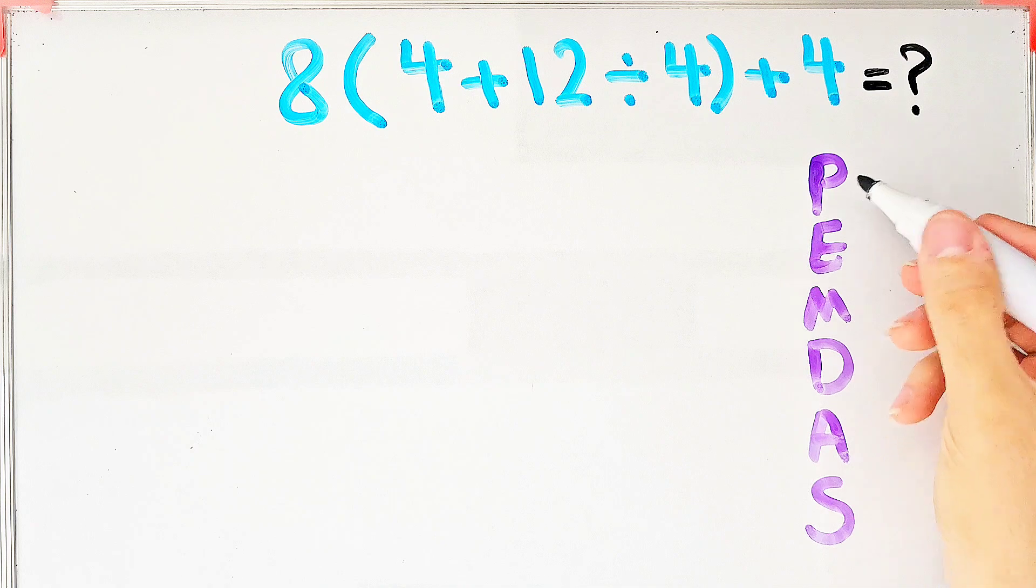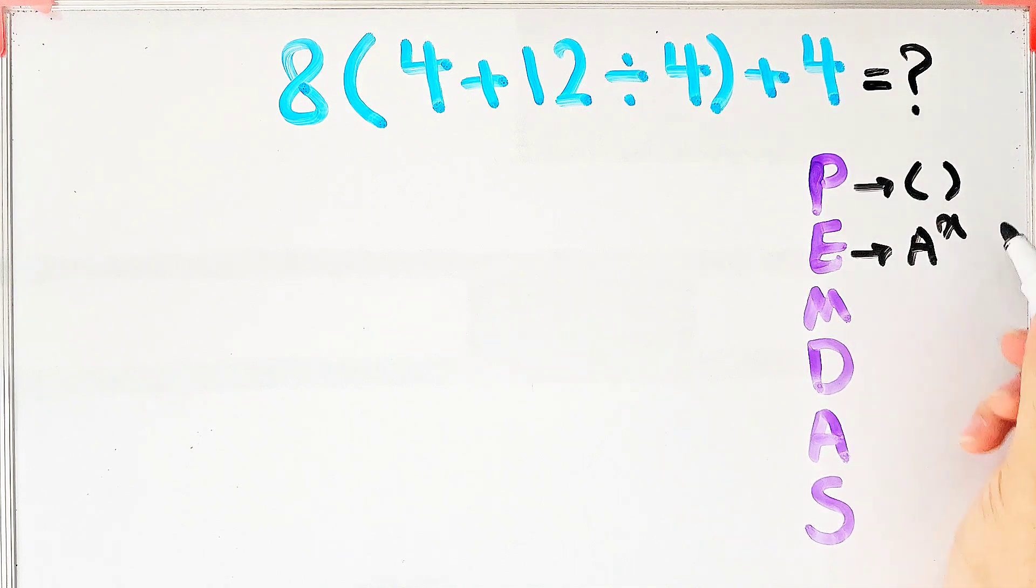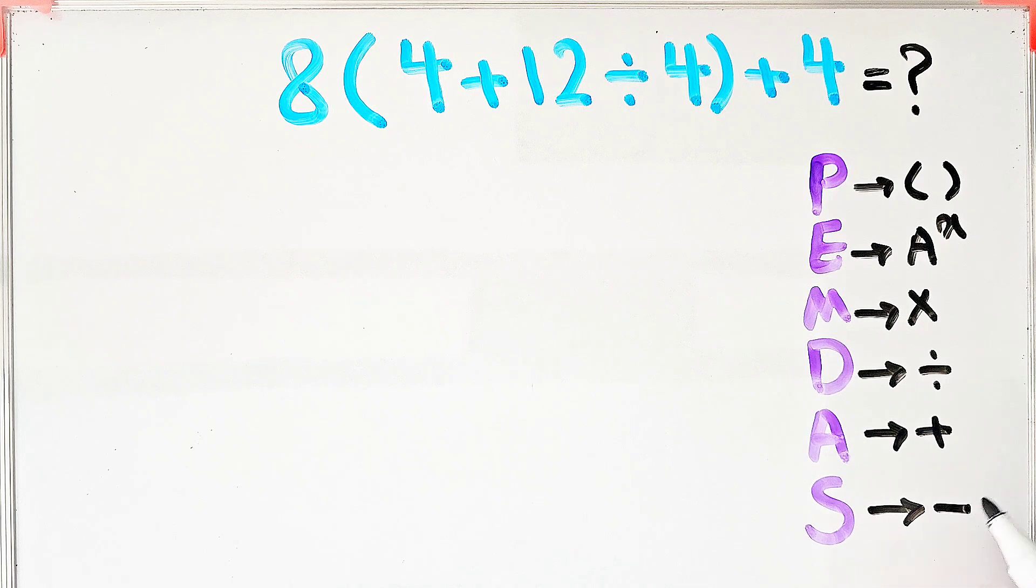P stands for parenthesis, E stands for exponent, M stands for multiplication, D stands for division, A stands for addition, and S stands for subtraction. Multiplication and division have the same level of priority. Also, addition and subtraction have the same priority. When we have both in an expression, we start from the left and simplify.